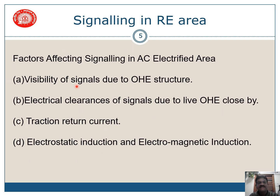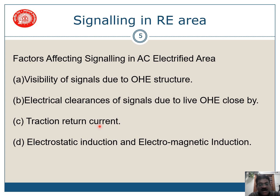What are the factors affecting signaling in AC electrified areas? They are generally classified into four: first, visibility of signals due to OHE structure; second, electrical clearance of signals due to live OHE close by — since OHE supply is 25 kV, our signals should have a safety margin; third, traction return current, which affects the signaling system as the second rail is used for return current; and fourth, electrostatic induction and electromagnetic induction, which mostly affect cables.